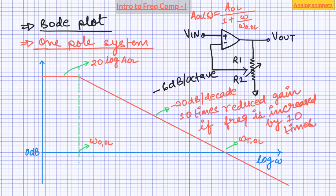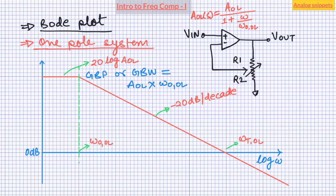If we multiply the low frequency gain by its bandwidth, this product is known as the gain bandwidth product. Along the minus 20 dB per decade roll-off line, the gain bandwidth product remains constant — which means the transition frequency or unity gain frequency is simply equal to the gain bandwidth product for a first order system. For higher order systems, the ratio of unity gain frequency to gain bandwidth product is an important indication of the stability of the system.